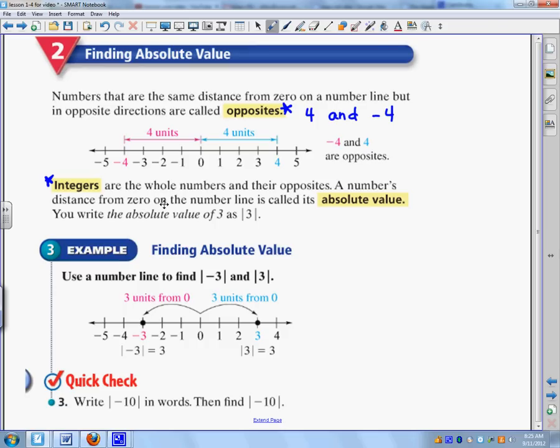A number's distance from 0 on a number line is called its absolute value. So write down this. Absolute value. And write down a number's distance from 0 on a number line. People get so confused with this because they think if it's positive, it's negative. And if it's negative, it's positive. They think it's an opposite and it is not.